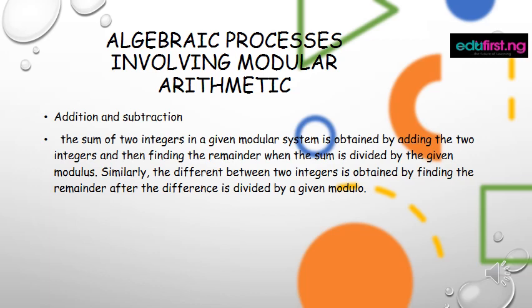The sum of two integers in a given modular system is obtained by adding the two integers and then finding the remainder when the sum is divided by the given modulus. Similarly, the difference between two integers is obtained by finding the remainder after the difference is divided by a given modulus.